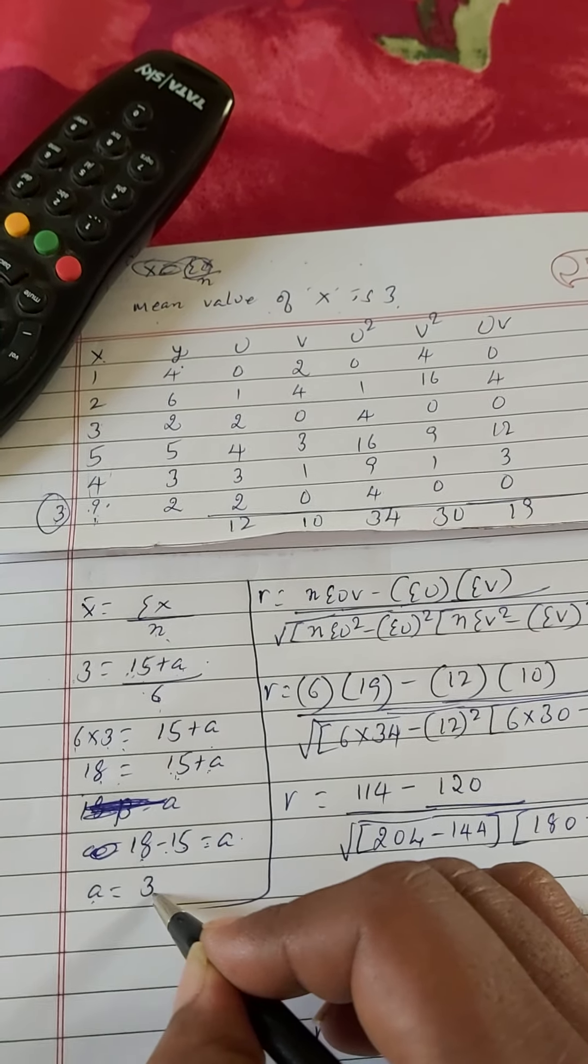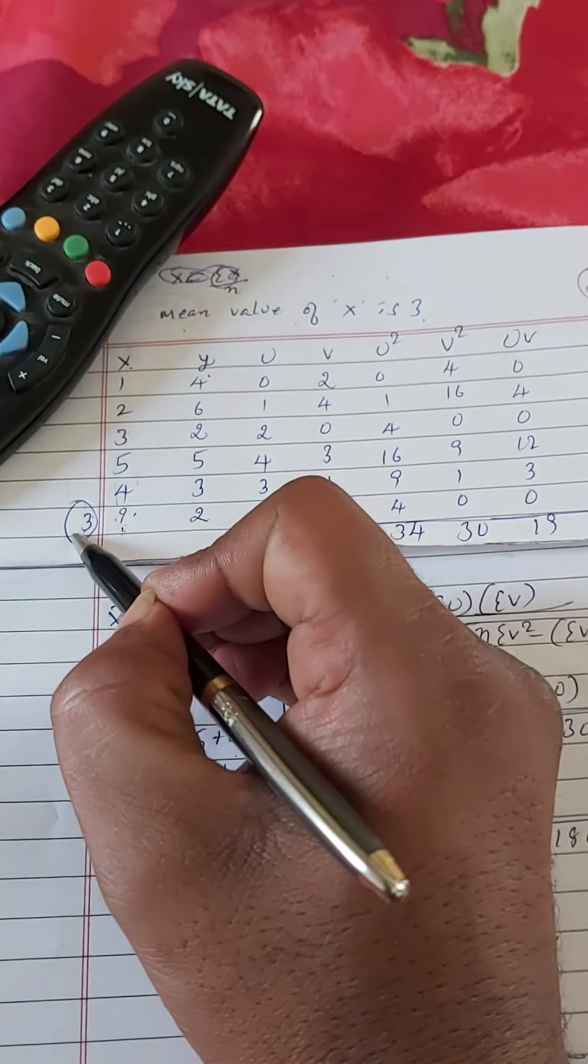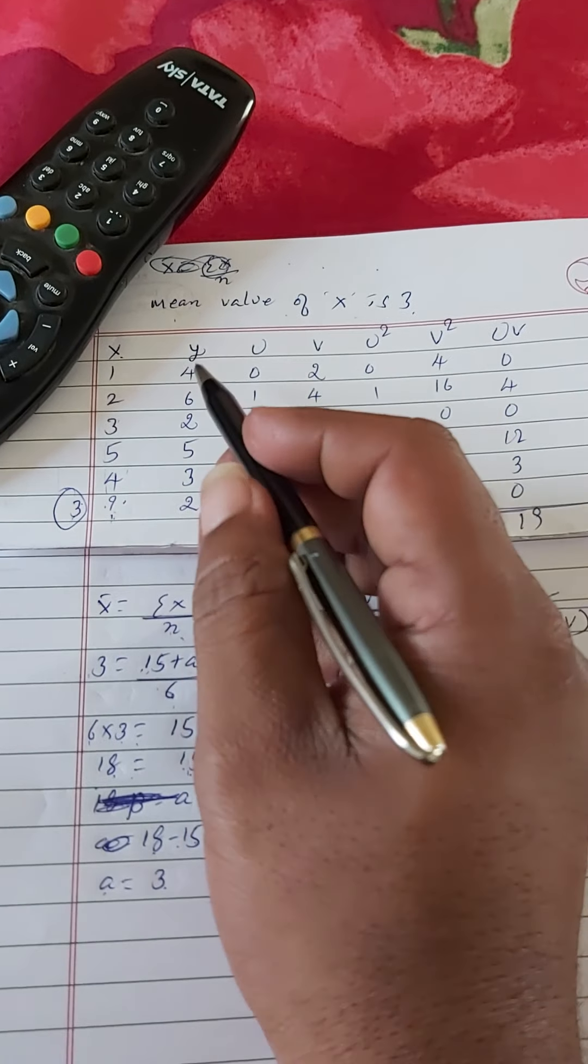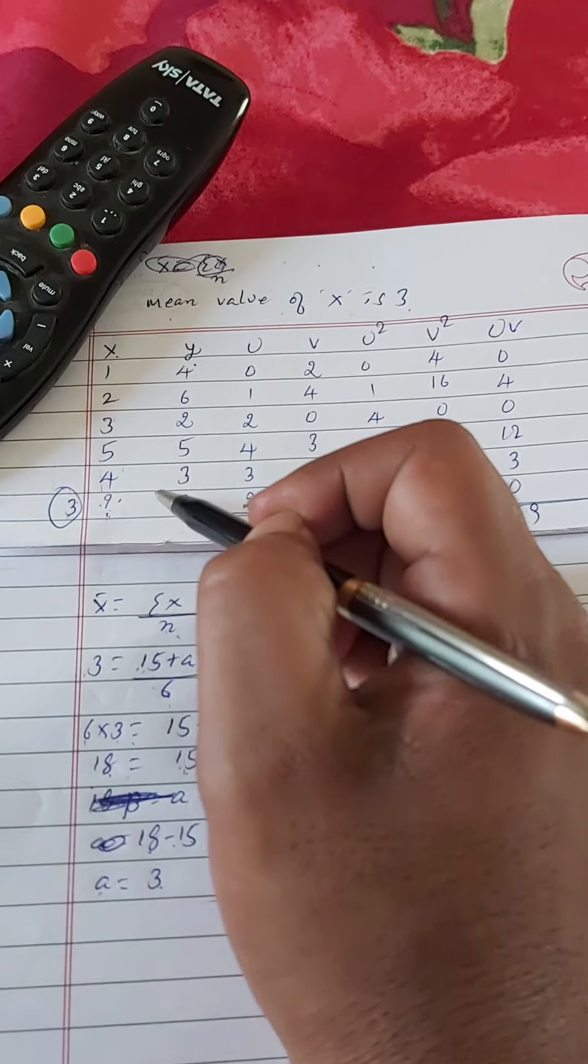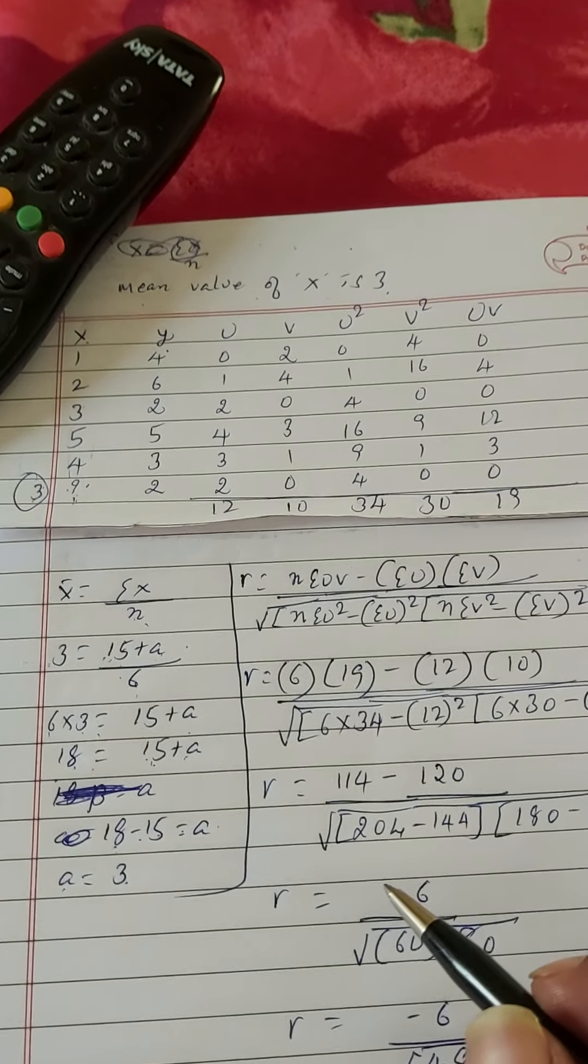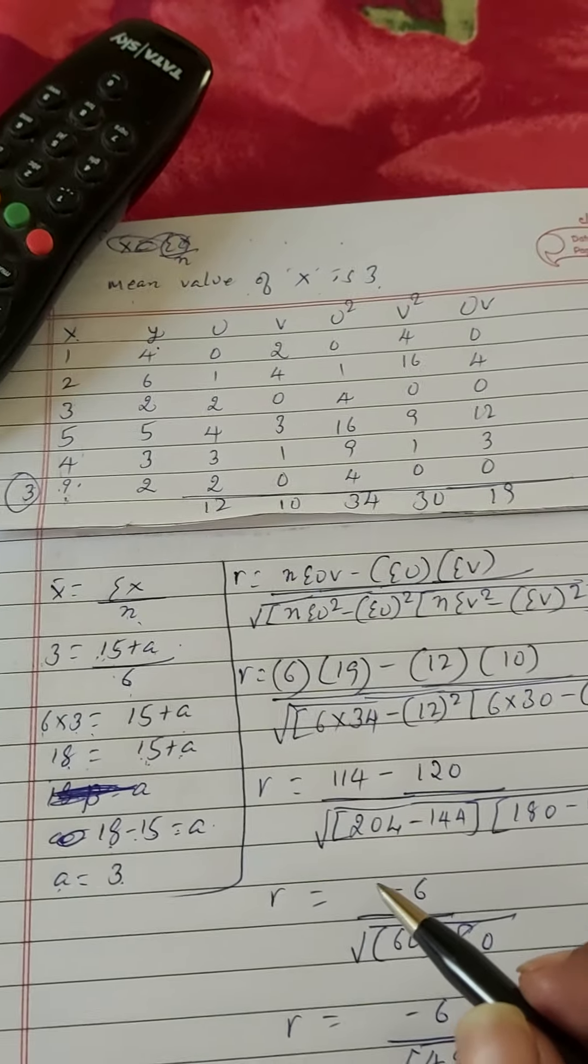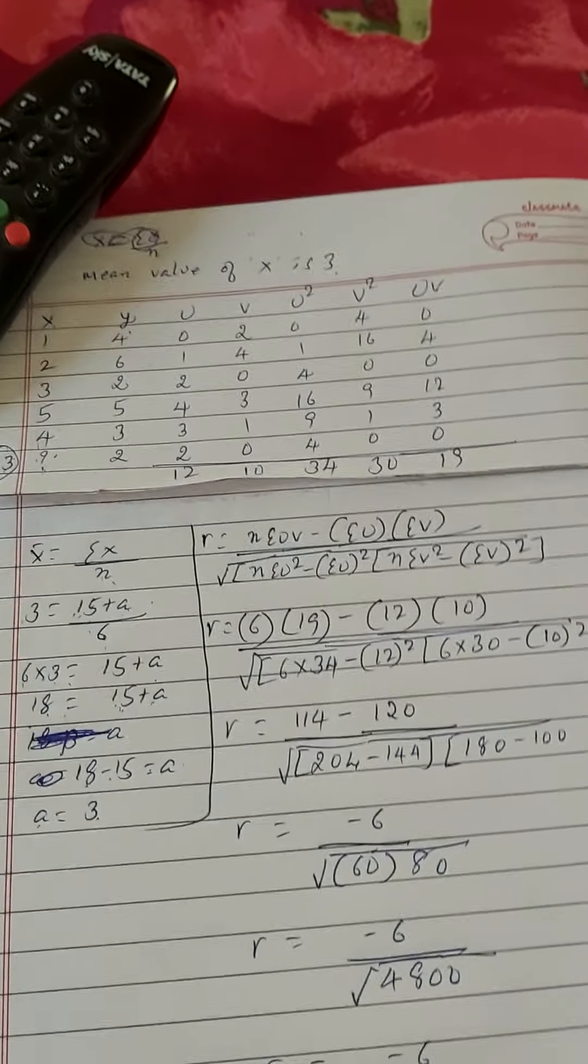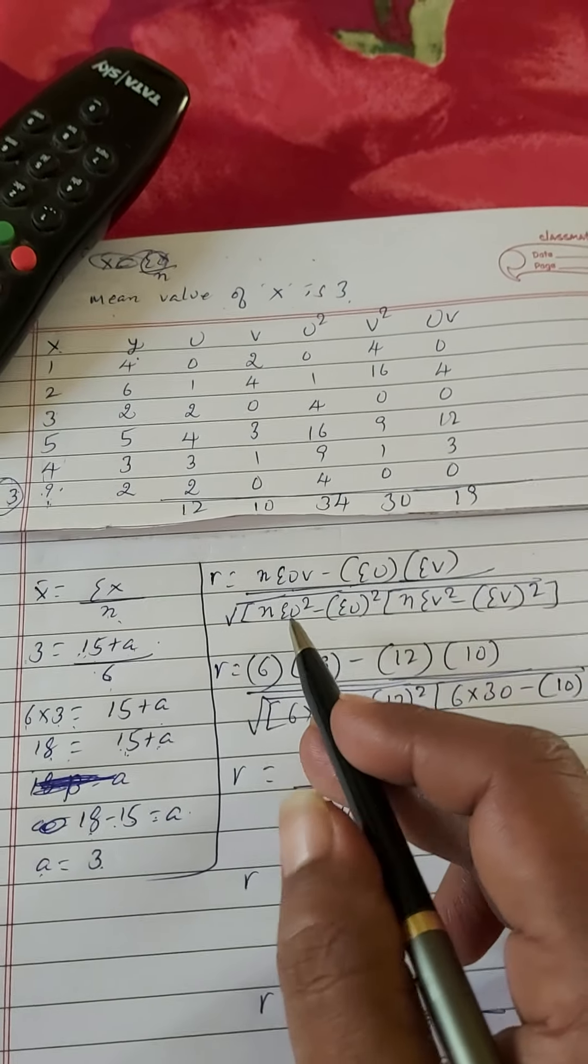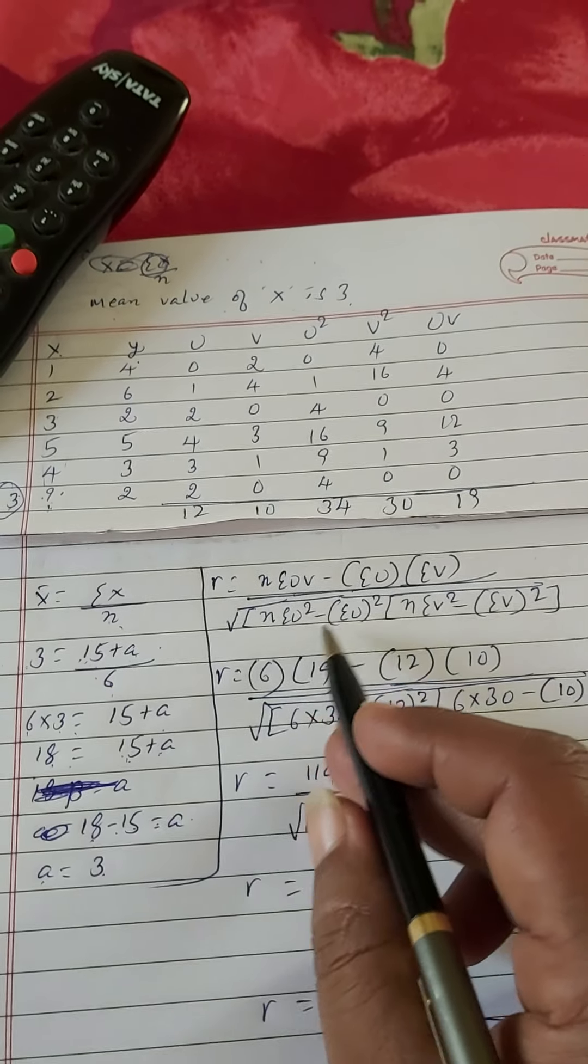We all know the formula for x̄, that means mean value. So x̄ is equal to sum of x divided by n. Here sum of x is nothing but total of x values.